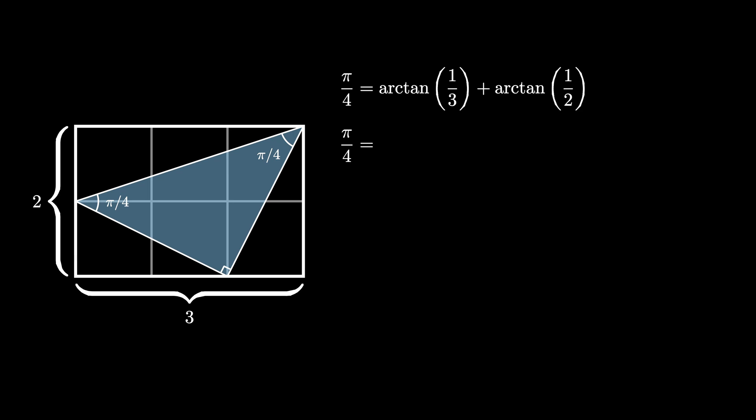The upper right pi over 4 angle can be obtained as the difference of two angles, one in this triangle which has an angle measurement of arctangent 3, and one in this triangle which has an angle measurement of arctangent 1 half.